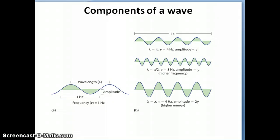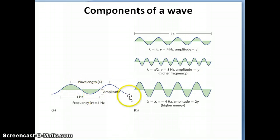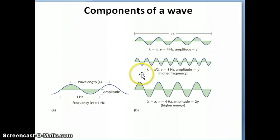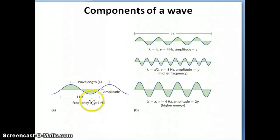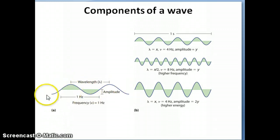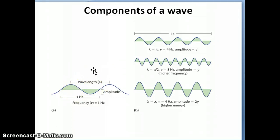So let's talk about what a wave is. A wave is really a mathematical function represented by this type of wavy structure — and that's why they're called waves. The mathematical functions that make up this shape are your trigonometric functions: sine or cosine, or a combination of sine and cosine functions, would result in a shape that looks like this. You can generate waves of all different types by different combinations of sine and cosine functions.